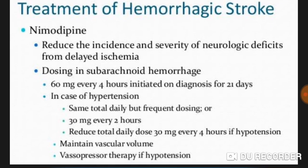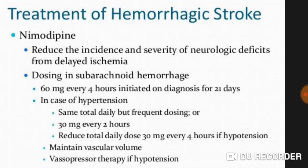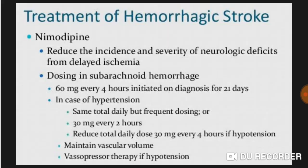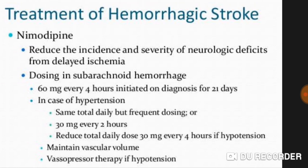Treatment of hemorrhagic stroke includes nimodipine — in India we prefer nifedipine (Nicardia) — which reduces the incidence and severity of neurological deficits and delayed ischemia. Dosing in subarachnoid hemorrhage: 60 mg every 4 hours initiated on diagnosis for 21 days. In case of hypertension, 30 mg every 2 hours, or a reduced dose of 30 mg every 4 hours. Maintain vascular volume with vasopressin therapy for hypotension.